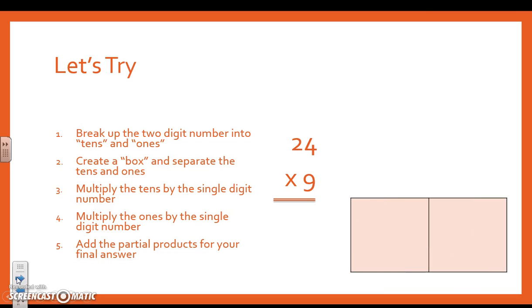Let's try another one. So the first step is to break up the tens and ones of my two-digit number. So I have two tens and four ones. Now I'm going to create a box. And I'm going to separate my tens and ones. So I did both of these steps.